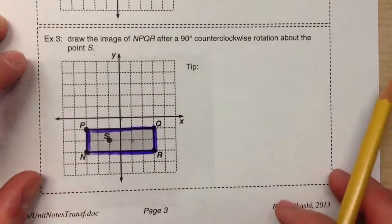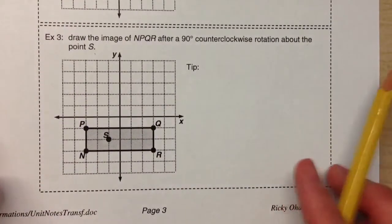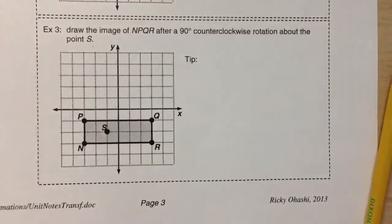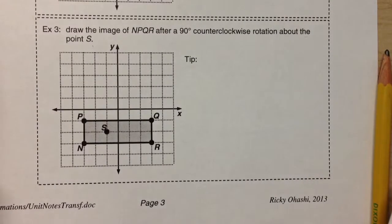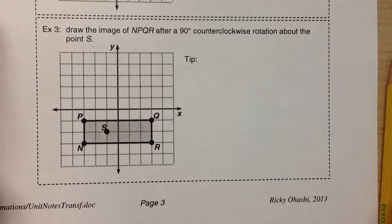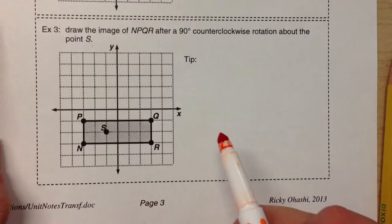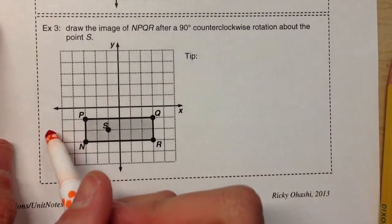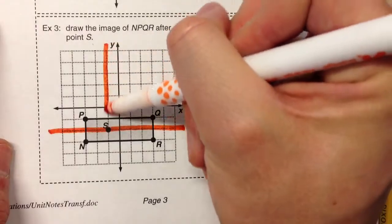Now, it's easy to rotate using tracing paper, but as soon as you take the tracing paper away, it's a little hard to visualize. So my tip in class today was draw fake axes. We're not used to rotating around points that aren't the origin.